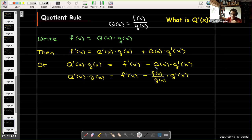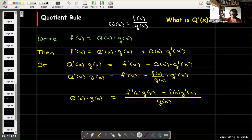I'll replace Q(x) with f(x) over g(x). That is the definition. And then I'd like to write this right hand side as a single fraction. So I'll need a common denominator, which will just be g(x). And now I've written it as a single fraction.